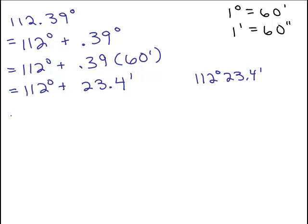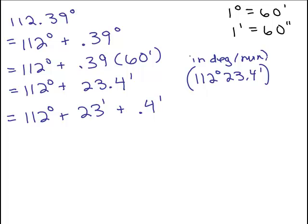But I want to go all the way to seconds. So now I have to change the part of the minutes that is after the decimal point to seconds. So I know the whole number part for the minutes is 23 minutes, but now I have 0.4 minutes as well. So by the way, this is just in degrees and minutes so far. So how can I rewrite this 0.4 minutes in seconds? Well, each minute is 60 seconds. So I could change this minute symbol by multiplying by 60 seconds.